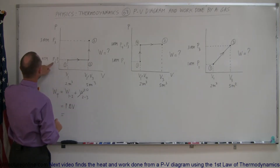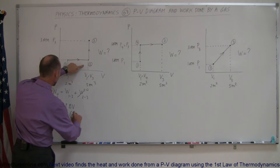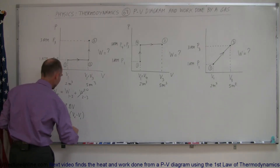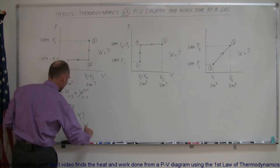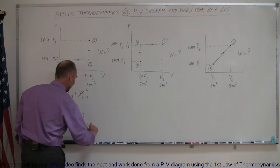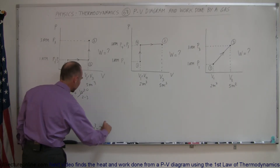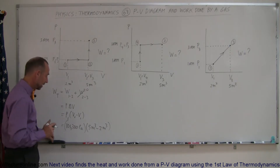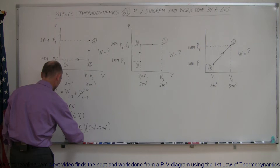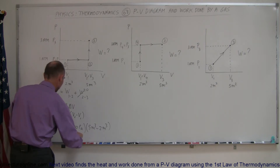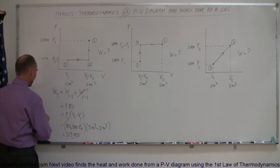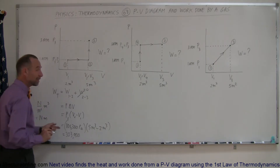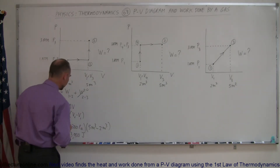The pressure is P1 and the change in volume is V2 minus V1. The pressure is one atmosphere, which is 101,300 pascals (newtons per square meter), multiplied by the change in volume: the end volume is five cubic meters and the beginning volume is two cubic meters, so the difference is three cubic meters. That gives us 101,300 pascals times three cubic meters, which equals 303,900 joules.